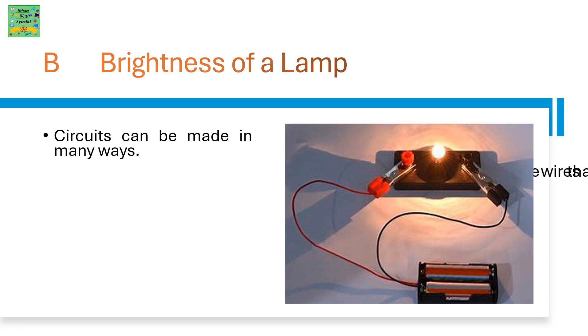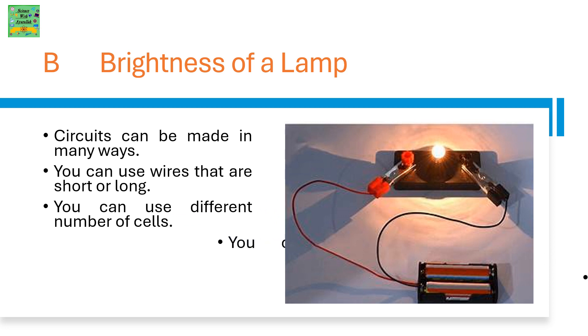Brightness of a lamp. Circuits can be made in many ways. You can use wires that are short or long. You can use different number of cells. You can use different number of lamps. You can also add buzzers or alarms.